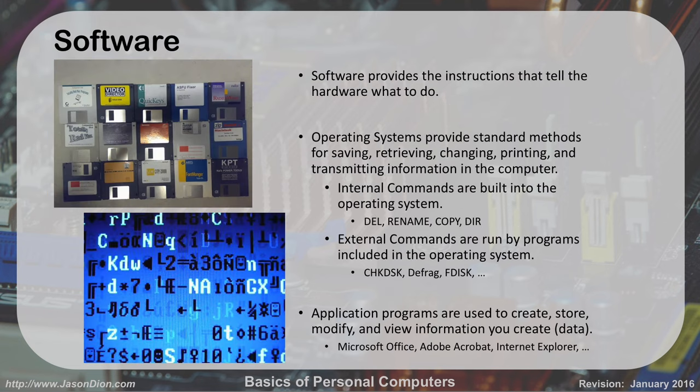Software provides the instructions that tell the hardware what to do. Without software, the hardware just sits there — it needs to know what to do. Our operating systems provide the basic, low-level functions for us to be able to use the computer. For most of us that's Windows. If you're using a Macintosh, it's OS X. If you have an Android phone, it's actually based on Android or Linux.